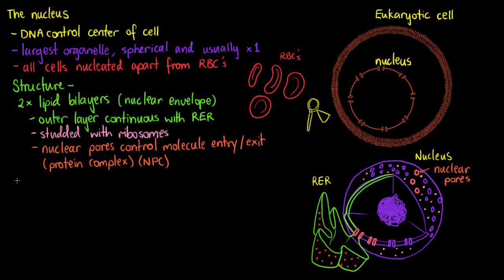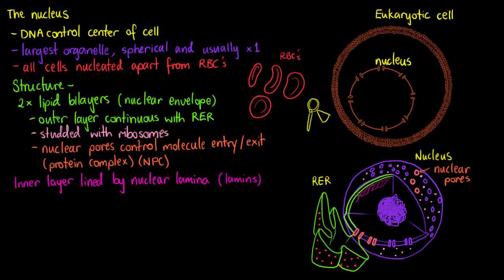Our outer lipid bilayer of the nucleus is studded with ribosomes and is continuous with the rough endoplasmic reticulum. Our nuclear pores span across both bilayers. The inner layer of the nuclear envelope is lined by something called the nuclear lamina, which is made of proteins called laminins. These form intermediate filaments and act almost as a cytoskeletal network for the inside of the nucleus. The nuclear lamina provides scaffolding to help the nucleus maintain its shape, an anchor point for DNA and chromosomes, and anchorage for the nuclear pores themselves.